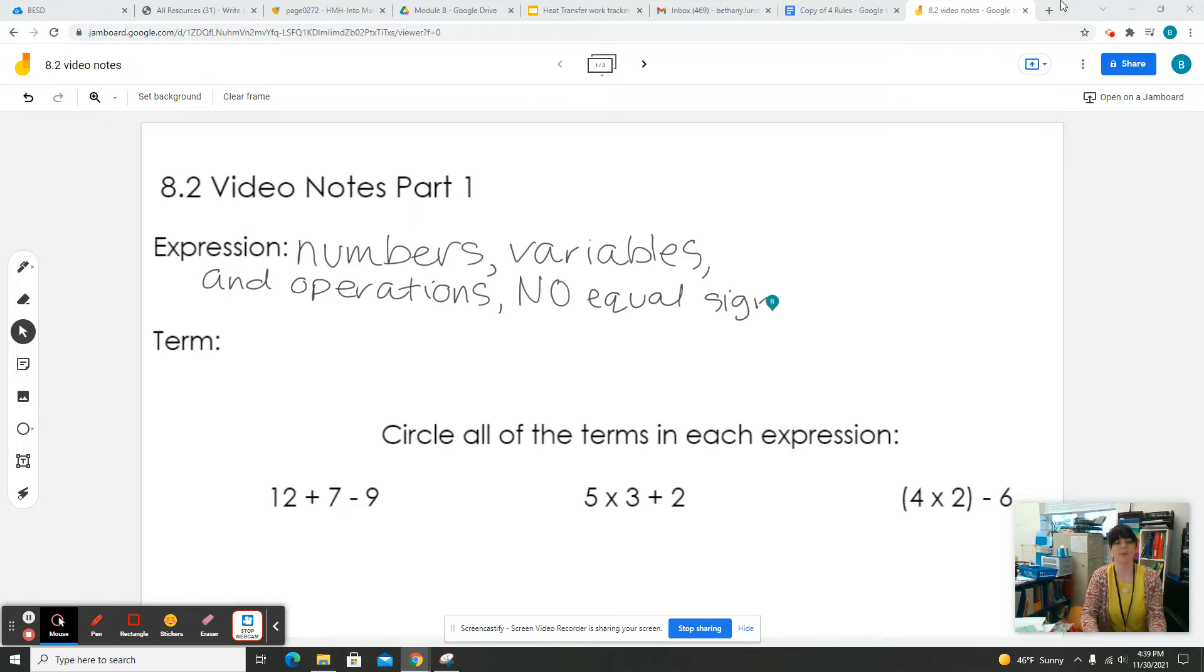So really all I care about when we're talking about an expression is not necessarily what it equals, just what it is. So an expression is just the numbers and the variables and the operations without the equal sign. You can think of this as, when you are expressing something, you're expressing it just how it is. Maybe not what it means, but you're just expressing something. And so this is what this is mathematically too, is just numbers, variables, and operations with no equal sign.